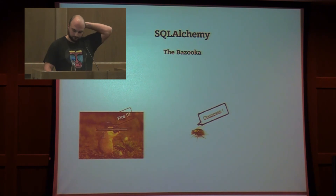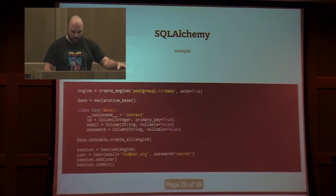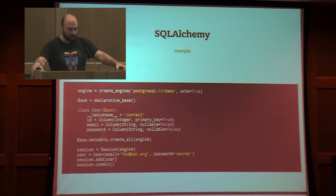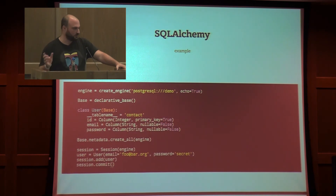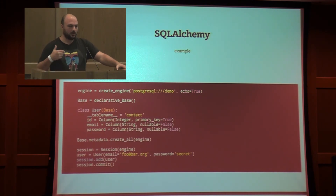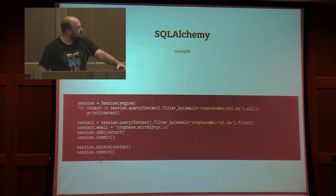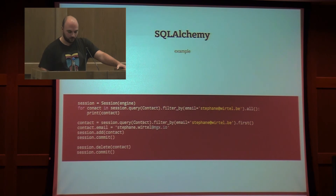The same example with SQLAlchemy. Create a new connection — an engine. Specify a declarative base, which is used for the models. Create the database and tables with create_all. Create a session for transaction management. When you add a new record to the session, automatically the system creates a transaction and commits it. Then we try to find records and print them, change a record with an update, and finally remove it.